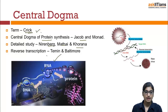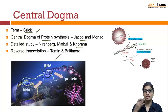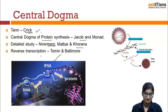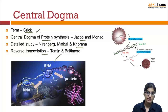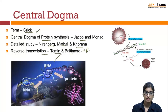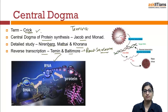There is one more thing: reverse transcription. DNA gives information, RNA is formed, and protein is produced — but sometimes DNA is formed from RNA. The formation of DNA from RNA is known as reverse transcription. It was explained by Temin and Baltimore in a virus named Rous sarcoma virus. That is why the enzyme is known as Taminase — this term is used for reverse transcription.